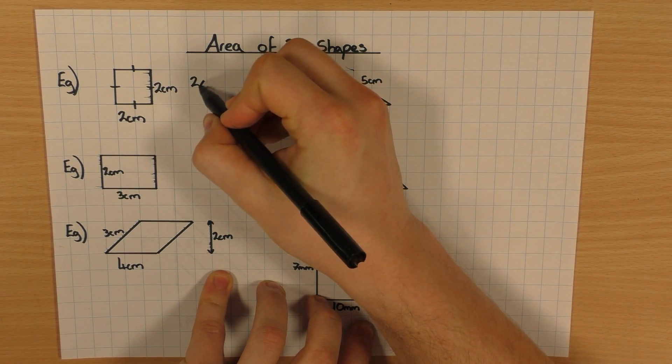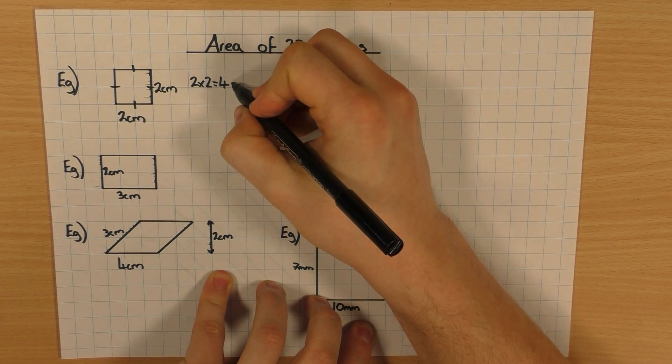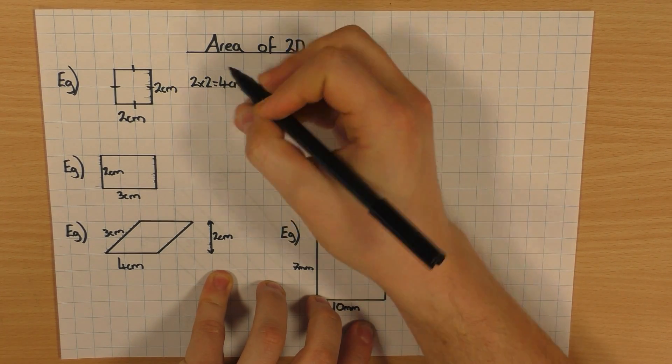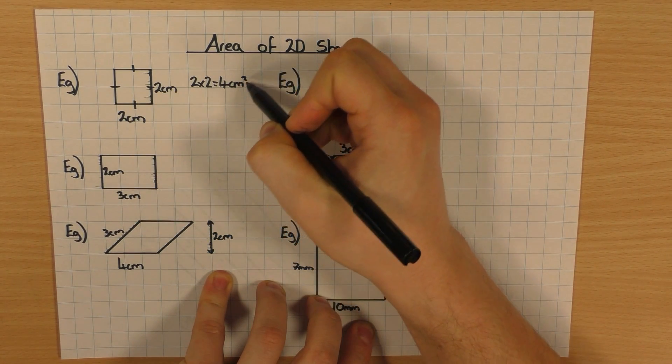So I'm going to do 2 times 2, which is 4. And don't forget the units, which is cm², because we're doing 2 times 2, which is 4, but cm times cm².